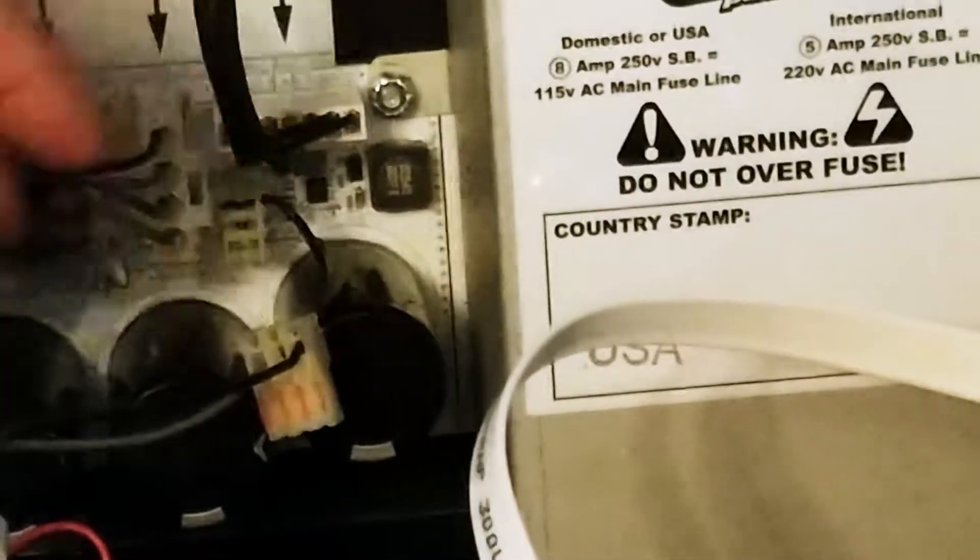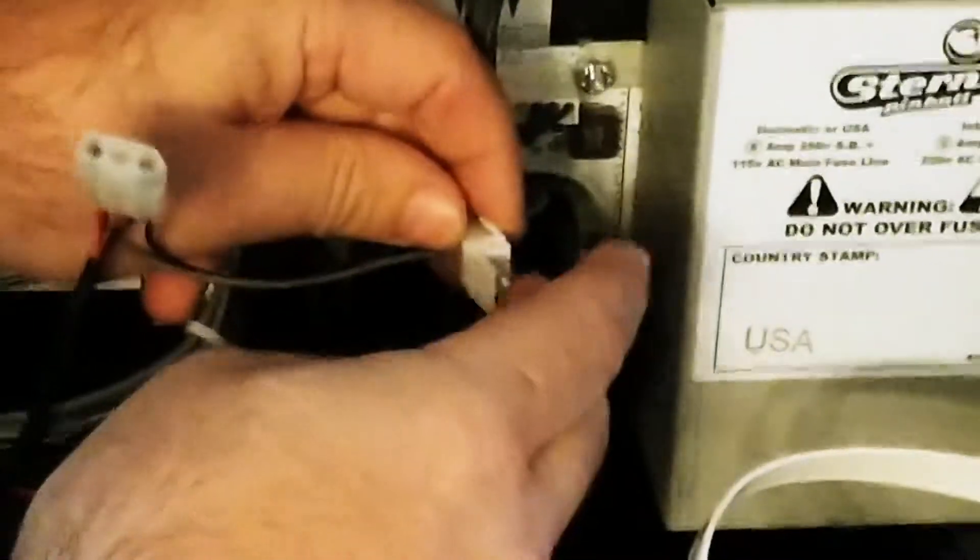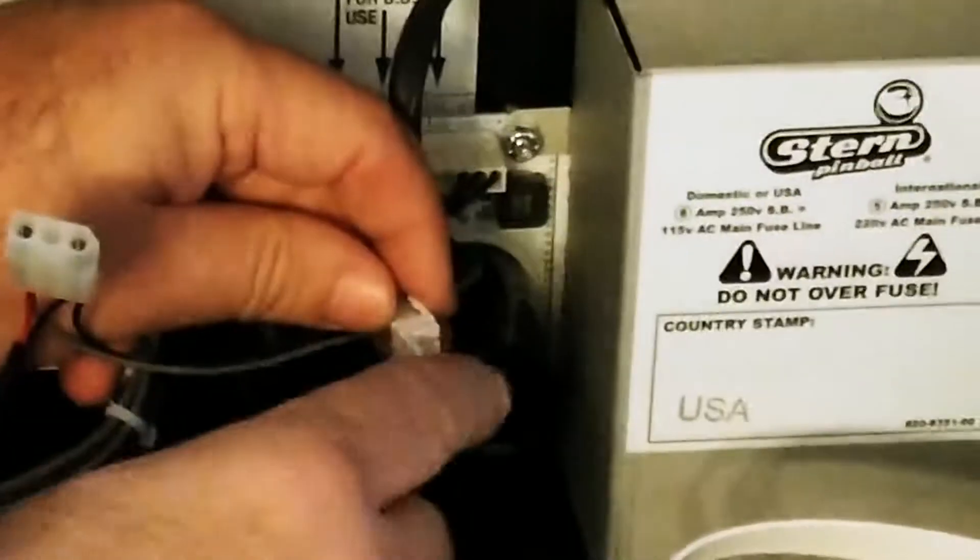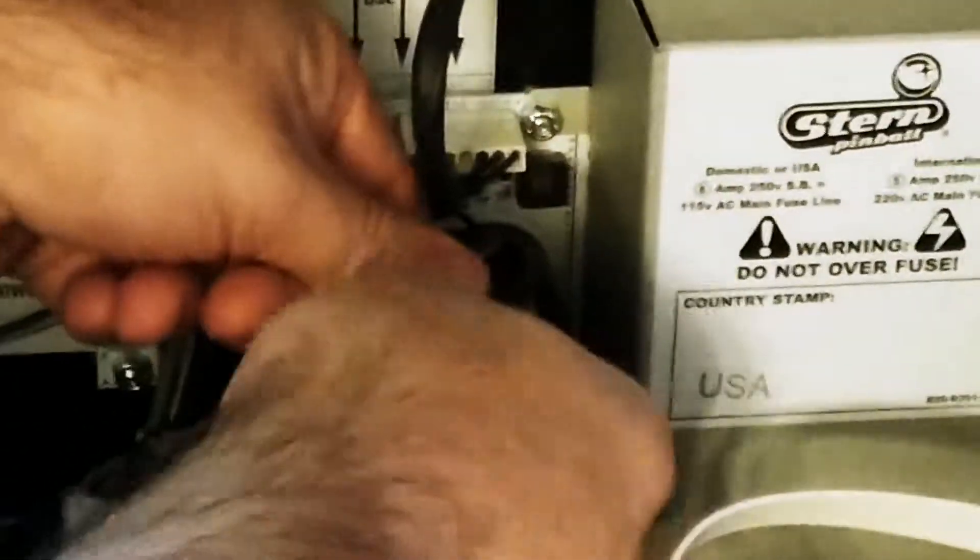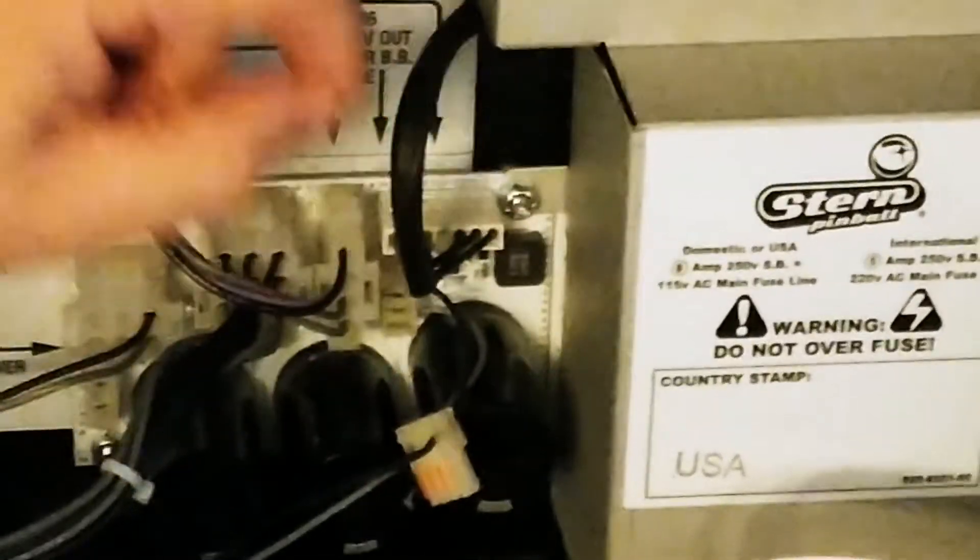Now if you had an existing plug on there, you would use this Z-Connect, which would plug in there, and your existing plug that was there, you could plug on here. If you're not going to use this, do not install that, because these are going to be open connections that you don't want to short out.